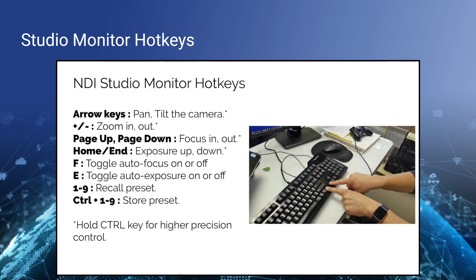Another feature that maybe a lot of people don't know about: if you're connected to a PTZ camera, you can use the arrow keys to pan, tilt, and zoom that camera. You can use plus and minus to zoom in and out, page up and down to focus in and out, and there's a whole list of presets that you can call as well.